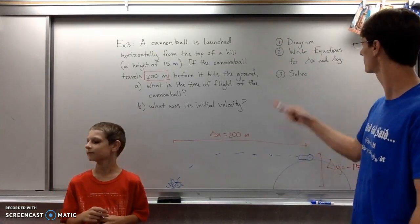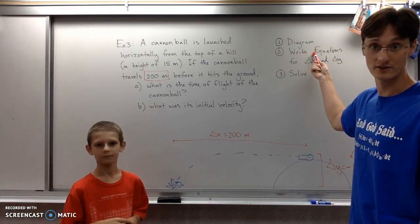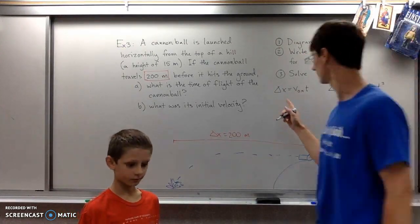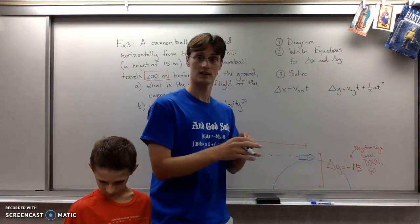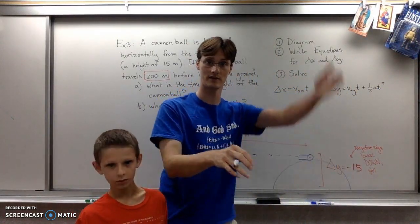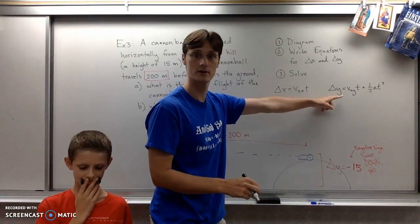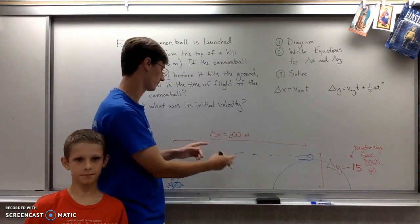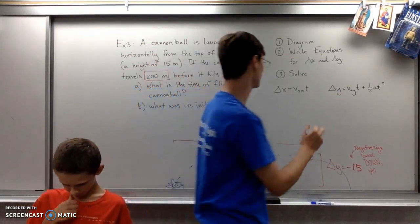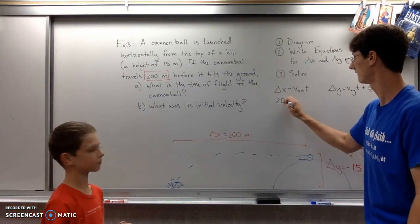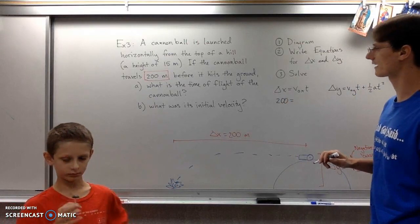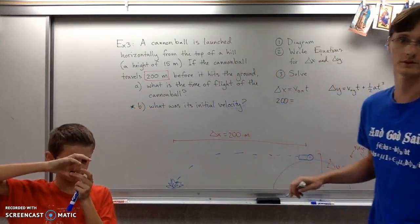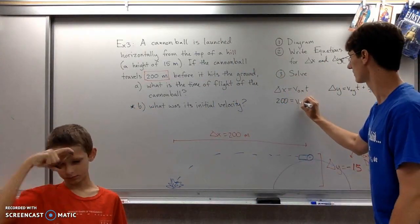We have to write our equations for delta x and delta y. These are our standard equations. Delta x equals v-naught x t because there's no horizontal gravity. Gravity only goes into the vertical equation. Plugging in what we know: 200 meters is delta x. For v-naught x, that's what we're solving for in part b, so we'll leave that alone.